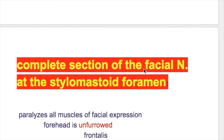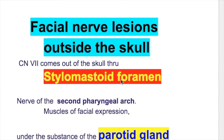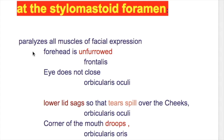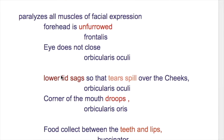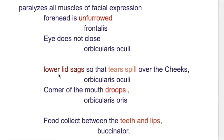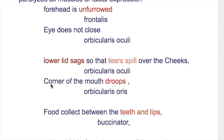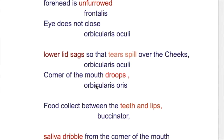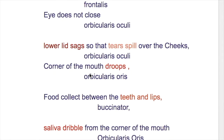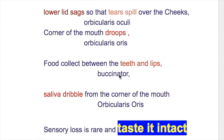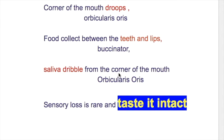Section of the facial nerve at the stylomastoid foramen paralyzes all muscles of facial expression. The forehead is unfurrowed because furrowing is a function of frontalis. The eye does not close because orbicularis oculi is paralyzed. The lower lid sags so that tears spill over the cheek. The corner of the mouth droops. Food collects between the teeth and lips because buccinator is paralyzed. Saliva dribbles from the corner of the mouth.